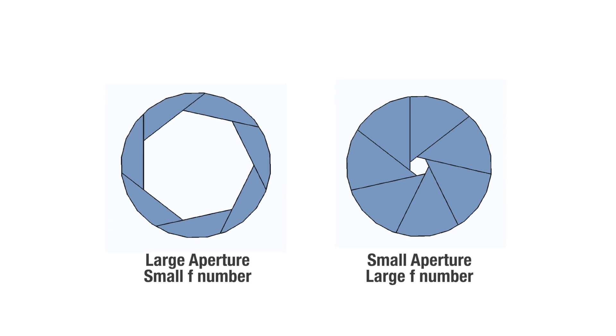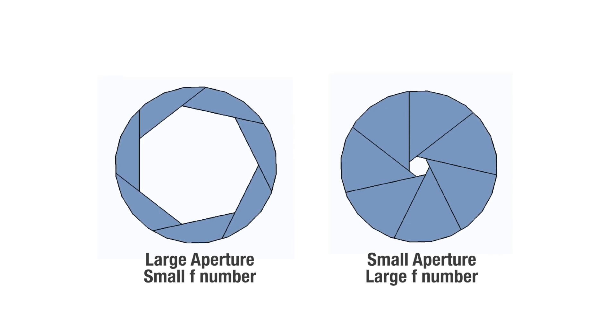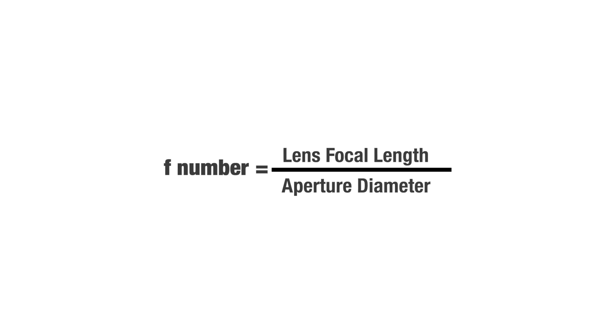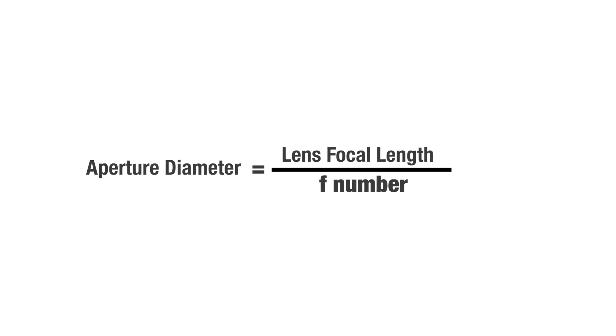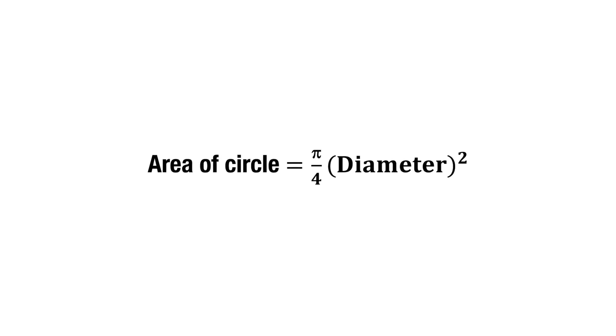Aperture is the size of the opening that lets light through the lens and into the camera system. The bigger the aperture, the more light that can reach the sensor. Every time you double the area of the opening of your aperture, you double the amount of light, and if you halve the area, you halve the amount of light reaching the sensor. From a previous lesson, we already know that large F numbers represent smaller apertures and small F numbers represent large apertures. We also know that the F number is equal to the focal length divided by the diameter of the aperture. That means that for any focal length, we can determine the diameter of the aperture by rearranging the equation. The area of a circle is equal to pi over 4 times the diameter squared, so if we have the diameter of the aperture, we can easily calculate the area of the opening.